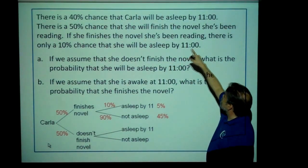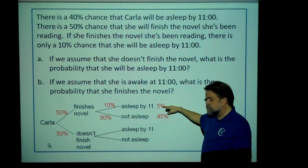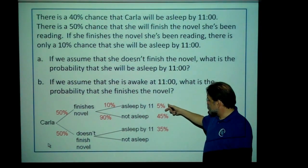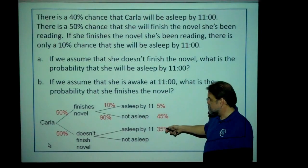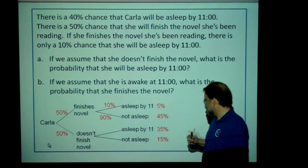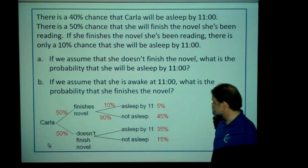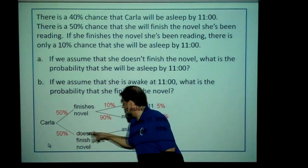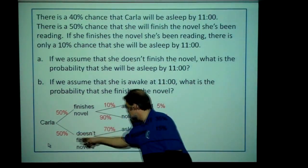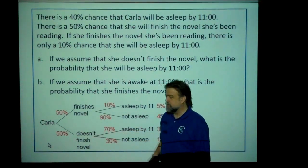Since there's a 40% chance Carla will be asleep by 11, and this branch gives 5%, the other 35% has to go on the other branch. And 5 plus 45 is 50, plus 35 is 85, which means the other 15 has to go there for them all to add up to 100%. We're still missing the conditional probabilities on the not-finishing branch, but we know how this works: 50% of this thing has to be 35%, which means that's 70%. And 50% of this thing has to be 15%, which means that's 30%. And these have to add up to 100%, so it works.